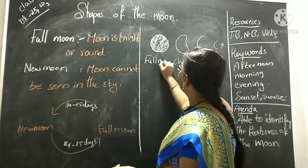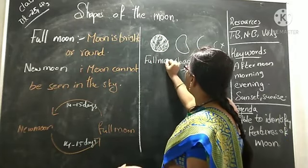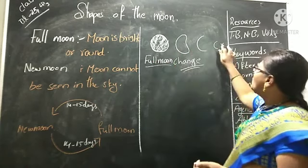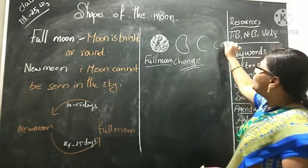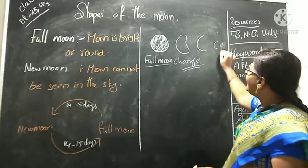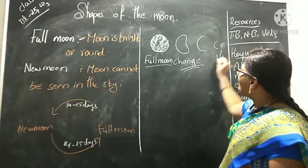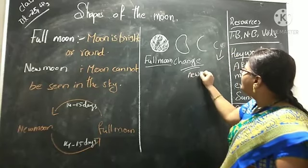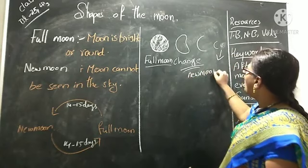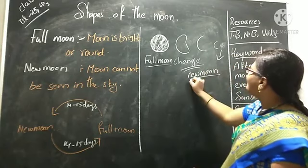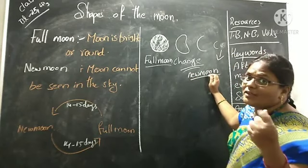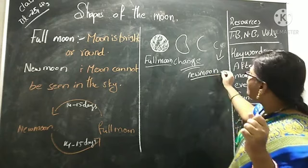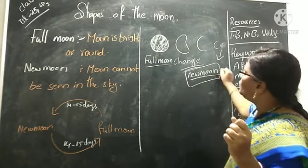What do we call it, children? Full moon. And when you don't have the moon visible on a day, that type of day we call a new moon. If there is no moon in the sky, it is called a new moon.